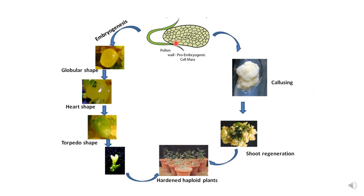Looking at the diagram, we can see the two pathways. In one pathway, a callus develops from a pollen grain — this undifferentiated mass of tissue then forms a shoot, which is transferred to rooting media to form roots, giving rise to the whole plant. In the second pathway, through embryogenesis, a globular embryo forms directly, then converts to heart shape, then torpedo shape, and then gives rise to a new plant.